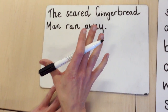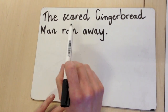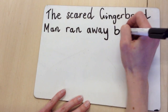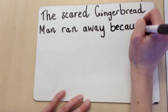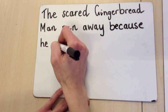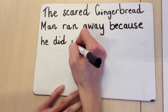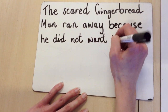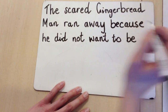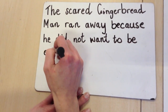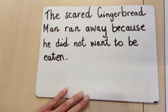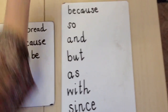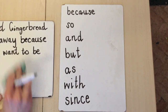So they could come up with many reasons, and then I would write: the scared gingerbread man ran away because he did not want to be eaten. I have now extended and given more information to my sentence. There are other connectives such as the word so.